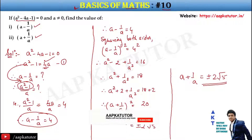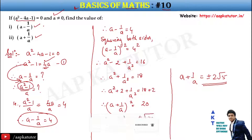So the value of a plus 1 upon a is equal to plus or minus 2 root 5. Hope you understood the method behind this solution. Thanks a lot for watching — let's meet in the next video where we'll be solving the 11th sum. Thank you, bye bye.